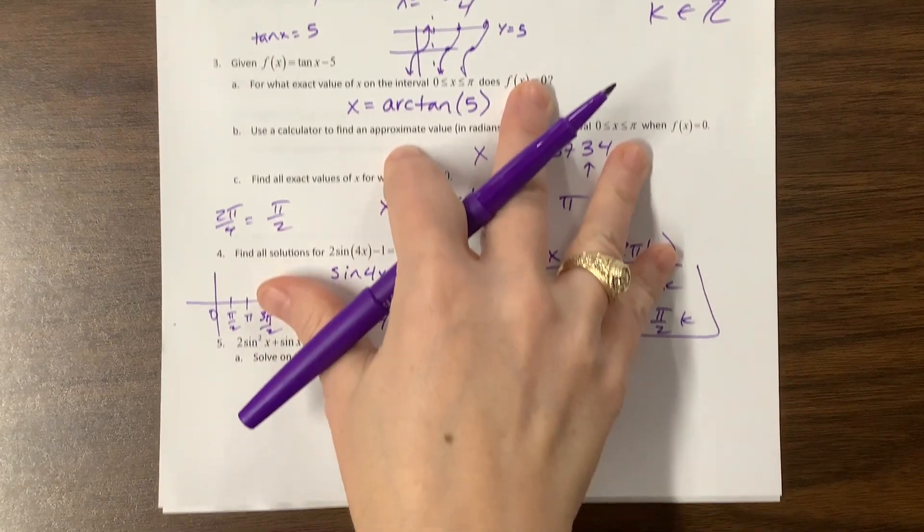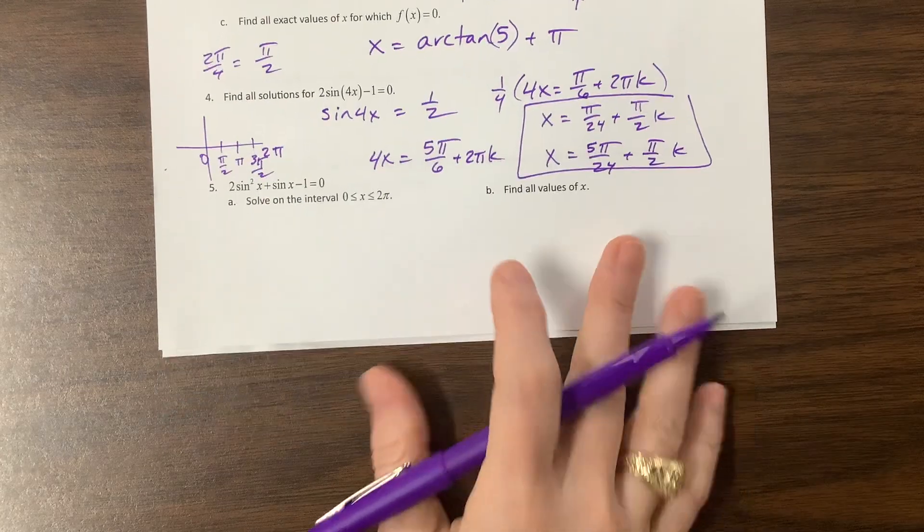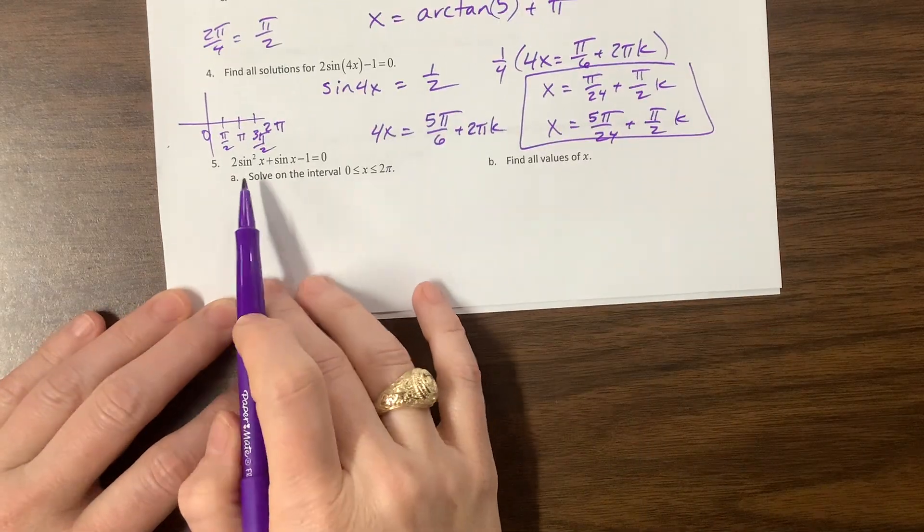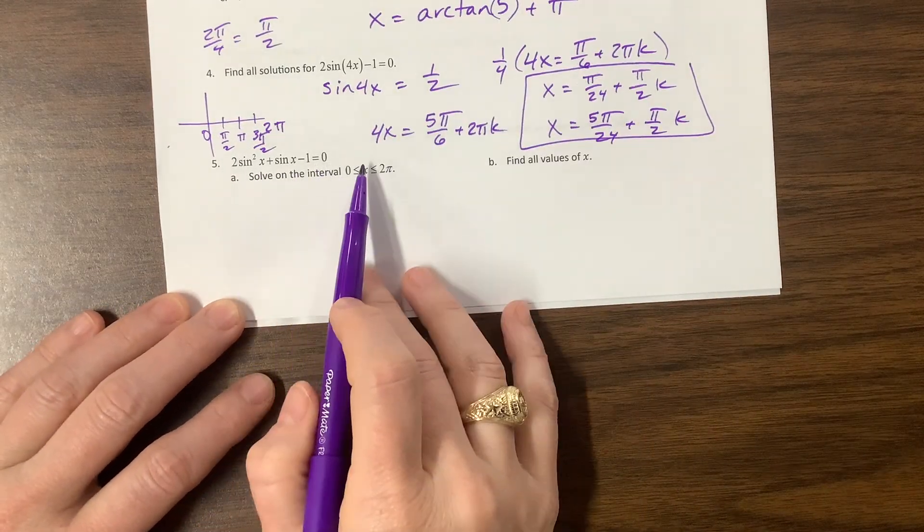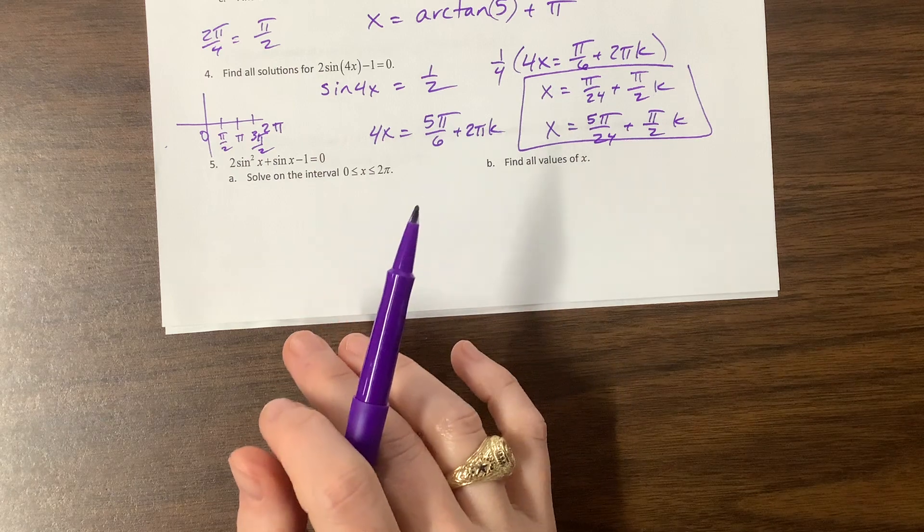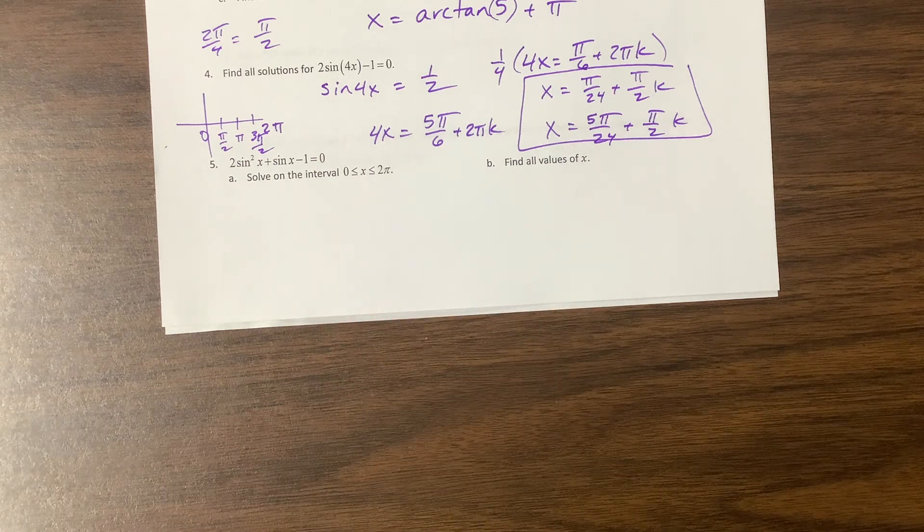There should already be a video that goes through what I have here. Now we're looking at 2 sine squared x plus sine x minus 1 equals 0. I don't have enough space, so let's get that piece of paper I was using.